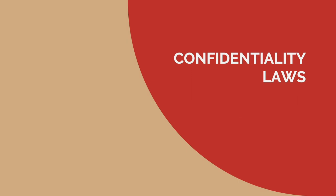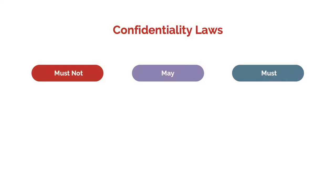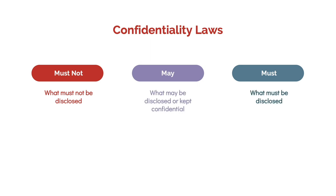Let's start by reviewing the confidentiality laws. Confidentiality laws must include three important things: what must not be disclosed, what may be disclosed, and what must be disclosed. Having the right tools in place, such as compliant forms and memoranda of understanding forms, can support and encourage appropriate and balanced sharing of information.